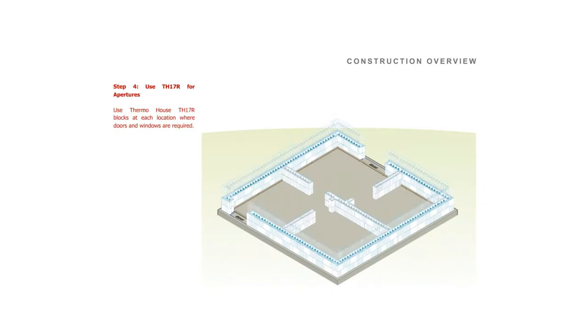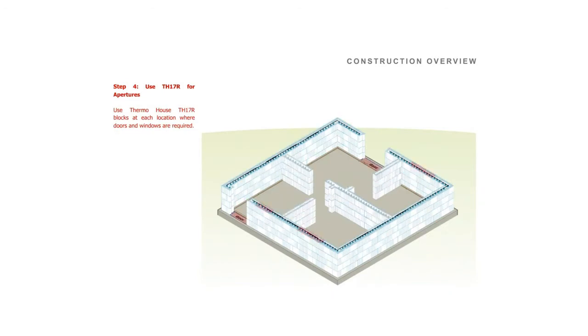Step 4. Apertures. Use Thermohouse TH17R blocks at each location where doors and windows are required.